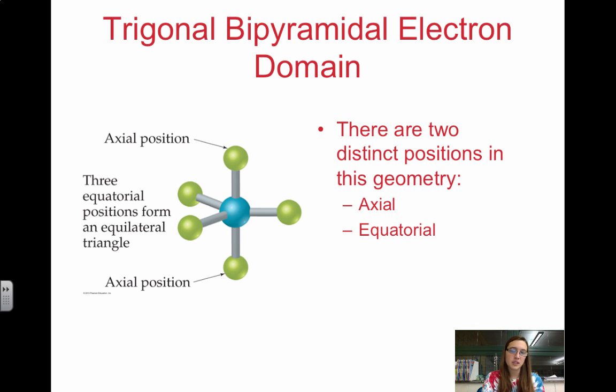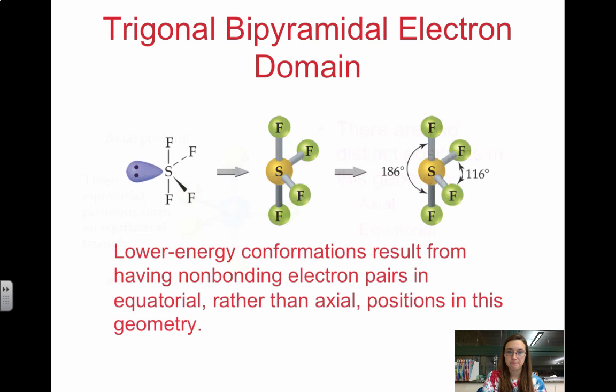Lower energy conformations result from having non-bonding electron pairs in equatorial because they are further from these atoms. We want to minimize repulsion, so we want it to have the larger bond angle. It's actually lower energy to start taking out of the equatorial before the axial.